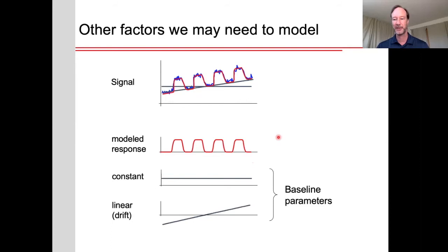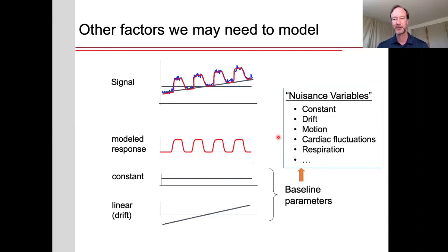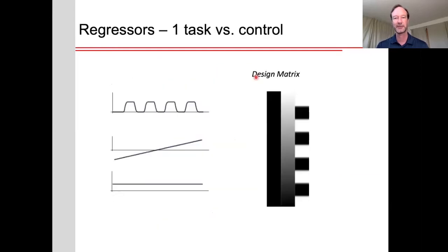These we can call baseline parameters or nuisance regressors. And there's a number of other nuisance regressors we could use as well, such as motion or physiological fluctuations, like heartbeat and respiration. These set of regressors are also sometimes called the design matrix.